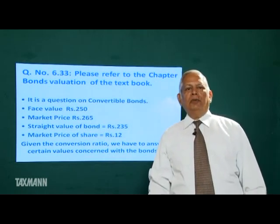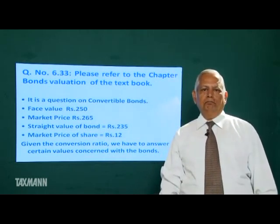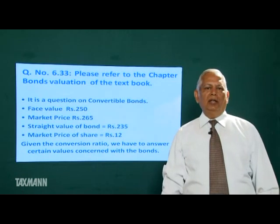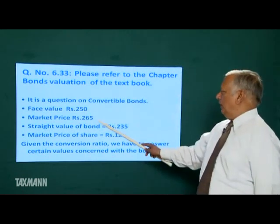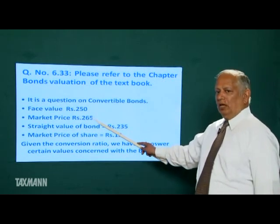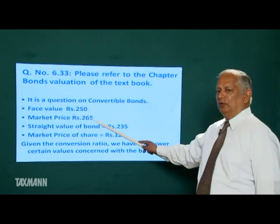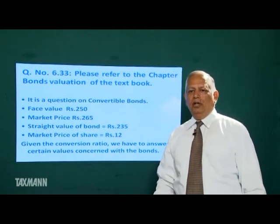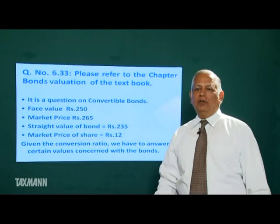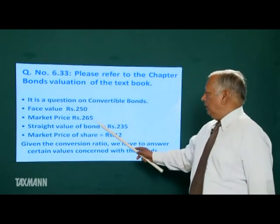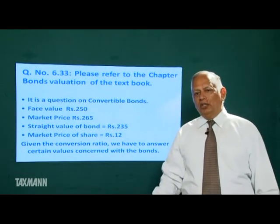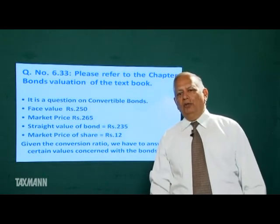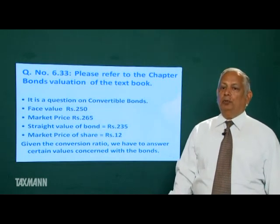Conversion premium: current market price of the convertible bond minus conversion value. Current market price is Rs. 265, while the market value of the 20 shares obtained is Rs. 240. So we are paying Rs. 25 extra — this is the conversion premium of Rs. 25.